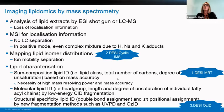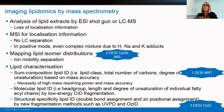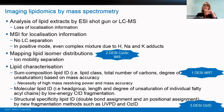We can use high mass accuracy — such as what I'm going to show on the DESI MRT — to get a lipid ID based on sum composition. We can also get molecular lipid IDs with low-energy CID fragments. And in the last part of the talk, I'll show some experiments we did with DESI-OZID to help with characterization of structural specificity of the lipid ID — double bond assignments as well as SN position assignments.